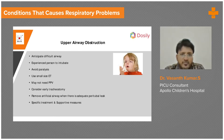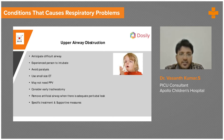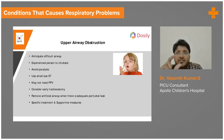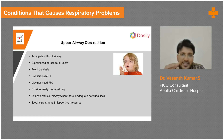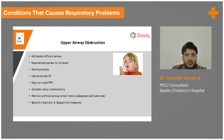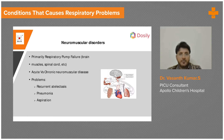Once you address the problem and the child overall gets better, you assess for leak. If the leak is not there, that means there is still some problem happening. Once there is adequate leak, you can again think of extubating such patients. This is about upper airway obstruction.